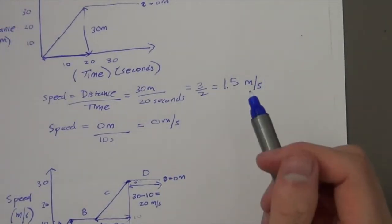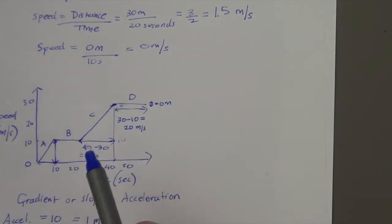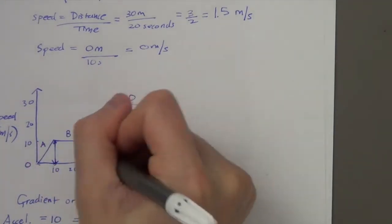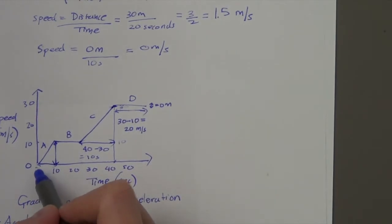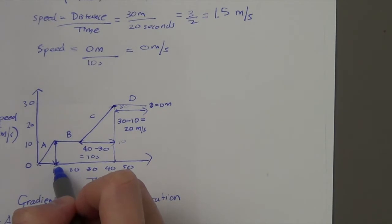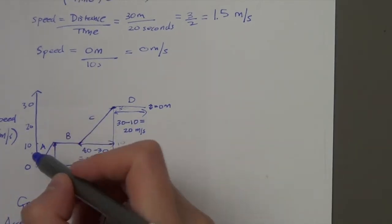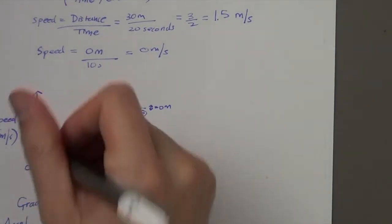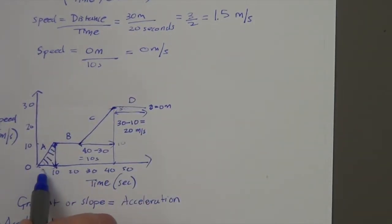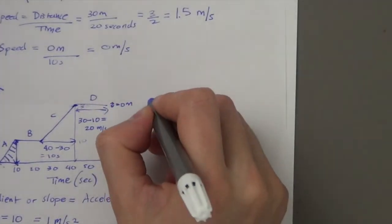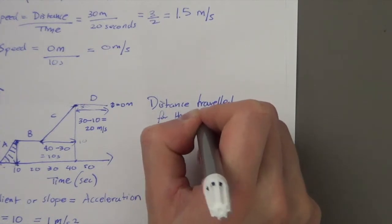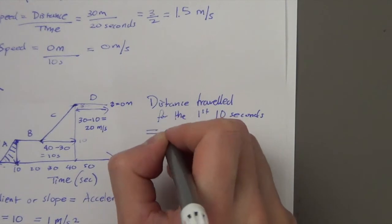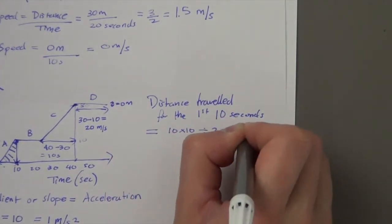What about the total distance travelled? There are two things you can do on a speed-time graph: work out the acceleration, which is the slope, and work out the distance travelled during a particular period. For 0 to 10 seconds, we need the area of this triangle: 10 times 10 gives 100, but because it's a triangle we divide by 2. So the distance travelled for the first 10 seconds is 50 metres.